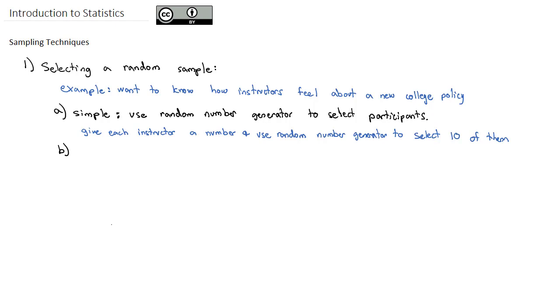Simple random sampling is probably the most common random sampling method that's used, but there are several others that are used in statistics. One of them is called systematic random sampling.